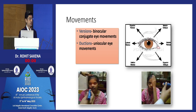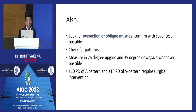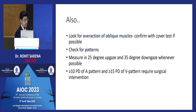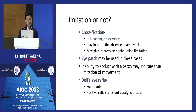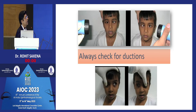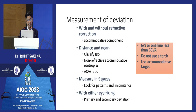Eye movements are critical. Versions are binocular, but if limitation is suspected, test uniocular movements. Look for upgaze and downgaze to assess oblique muscles — we use 25-degree upgaze and 35-degree downgaze. More than 10 prism diopters difference in upgaze/downgaze is significant for A/V patterns (15 prism diopters for V pattern). A V pattern indicates inferior oblique overaction. In cross-fixating children with apparent movement limitation, test adduction to confirm comitant versus incomitant strabismus.